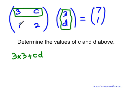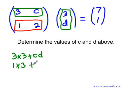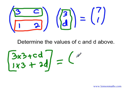For the next one, I take the second row this time and multiply it by the only column available. So it's going to be 1 times 3 — first by first — plus the second by the second, which is 2 times D, giving us 2D. We're multiplying a matrix by a matrix, and we'll put the equal sign and 7, 1.